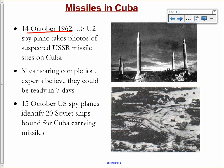The U.S. discovered the missiles in Cuba in early October 1962. U-2 spy planes took high-resolution photos of missile sites being put into operation. Because we had spies and knew what their missiles looked like, the CIA could tell from the photographs that these were offensive missiles — meaning they'd be used for attack, not to defend Cuba. The missile sites would be operational in seven days, putting the United States under pressure to act immediately.